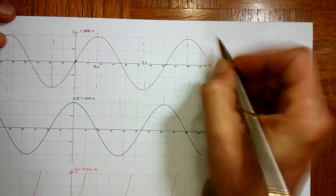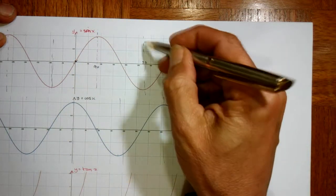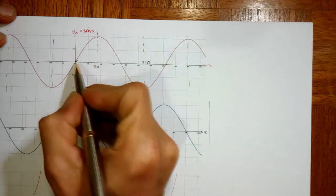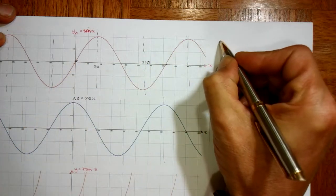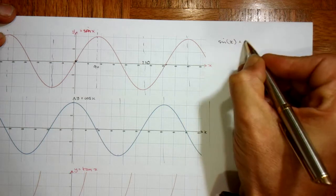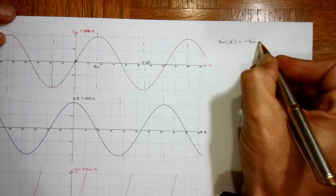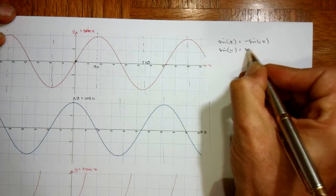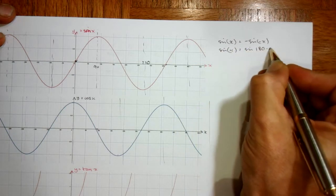So putting those two together, the sine graph, line symmetry at 90 and at 270, and rotational symmetry at 0, that means that sin of x is the same as minus the sin of minus x. It means that sin of x is the same as sin of 180 minus x.